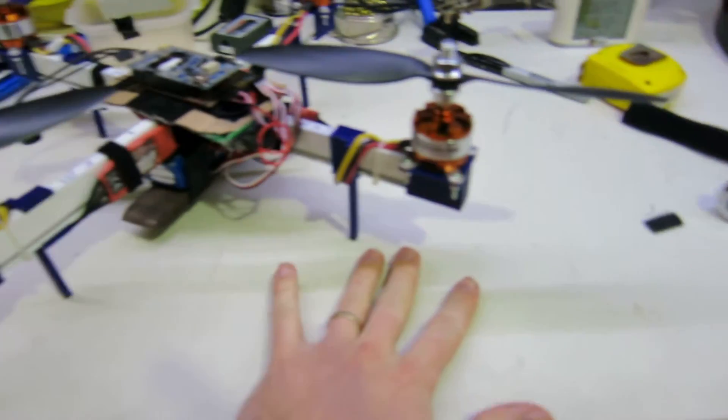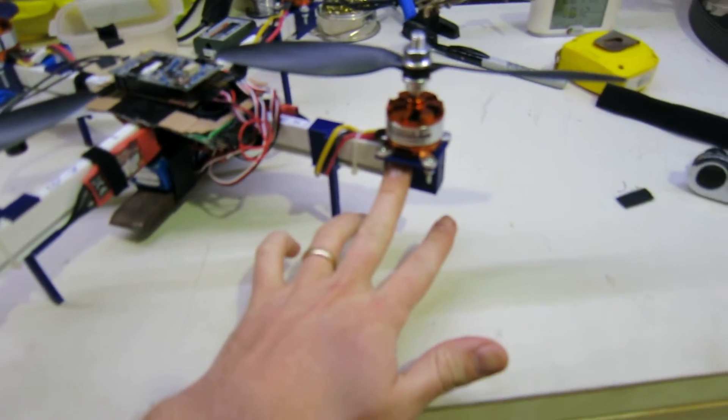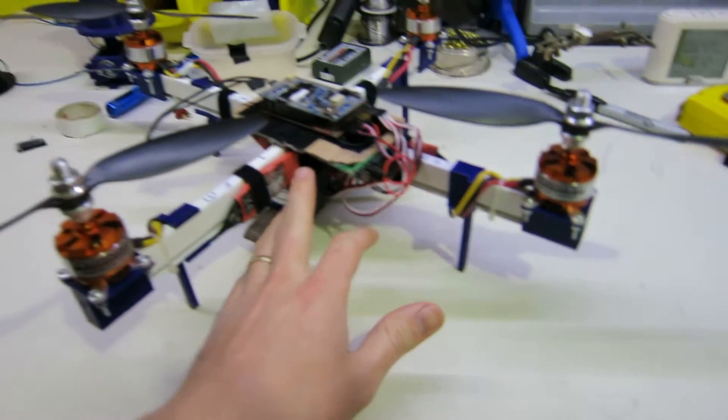There are a few different types of printed parts. There's the motor mounts, there's the legs, there's the hub piece in there.